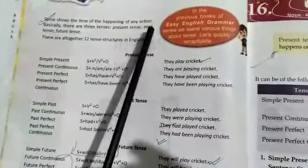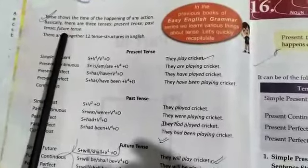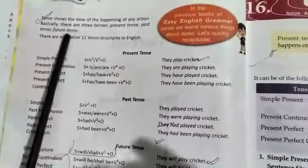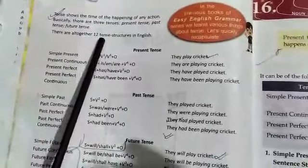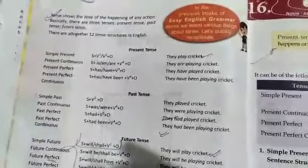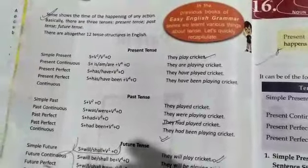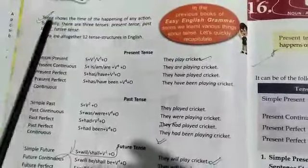First is your present tense, second is past tense, and third is future tense. And these three tenses are subdivided into four parts. In this way all together, all together 12 sentence structures are there in English.